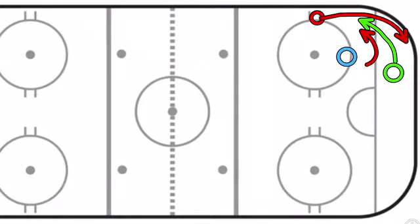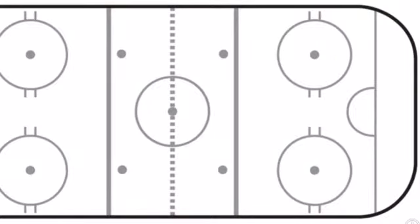What else can we do instead of drop passing it? Fake the drop pass. So now we create the switch, but this guy holds on to the puck and attacks the net. So right now that's our switch down low in the corner. Where else can we do a switch?